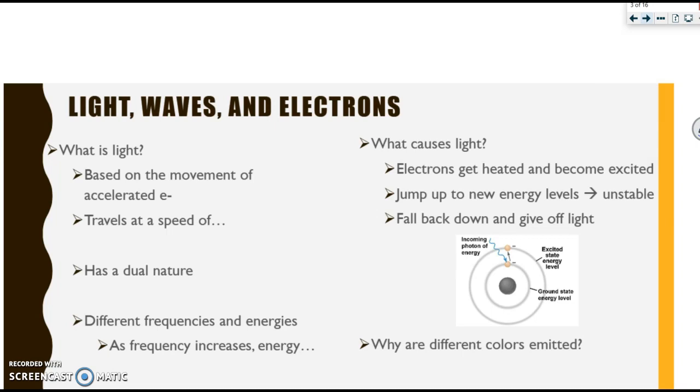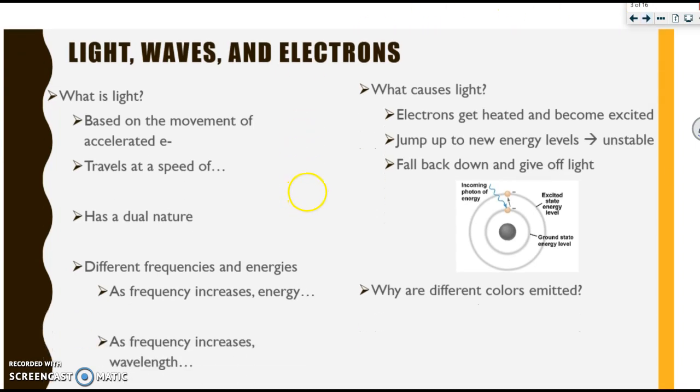Let's start by discussing what light is. Light is based on the movement of accelerated electrons. It travels at a speed of 3.0 times 10 to the eighth meters per second. It is said to have a dual nature because it can act like both a particle as well as a wave.